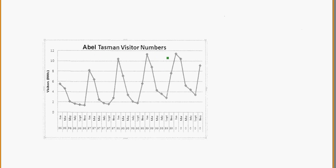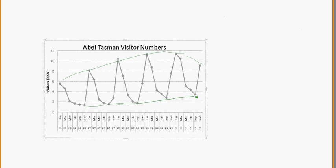Looking at Abel Tasman visitor numbers, this is another time series graph. We can see the different seasons broken up throughout the year. The visitors here are in thousands, and we can see the long-term trend shows quite a big increase in the peaks — the peaks are getting slightly bigger each time, not a huge increase, and a bit of a drop off. On the minimums, we've got a little bit of a consistent increase as well.